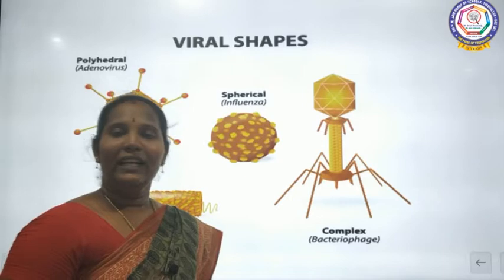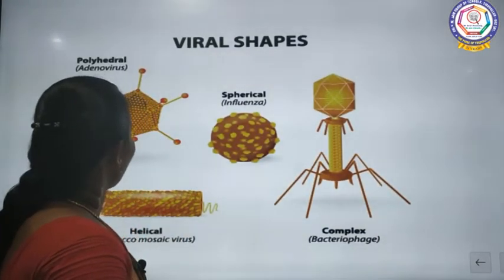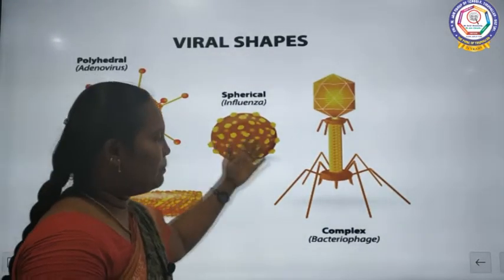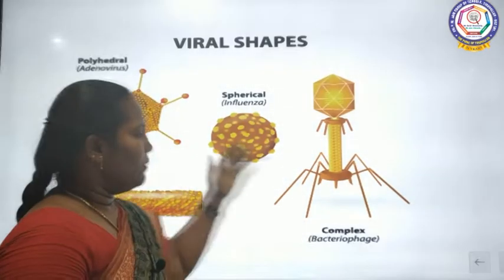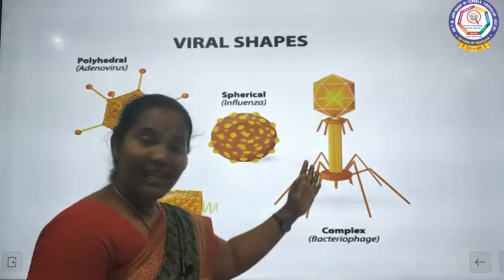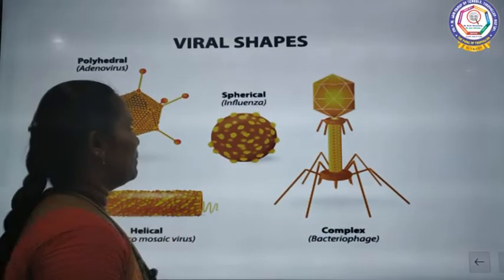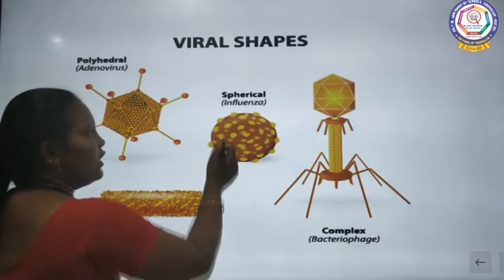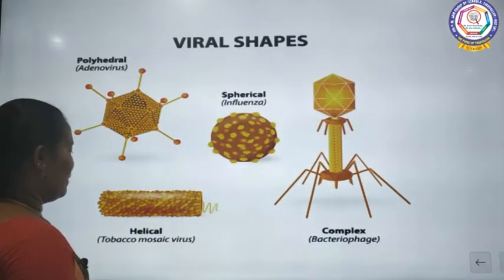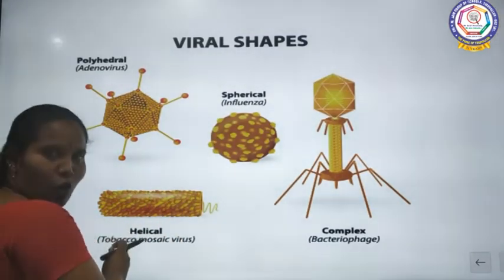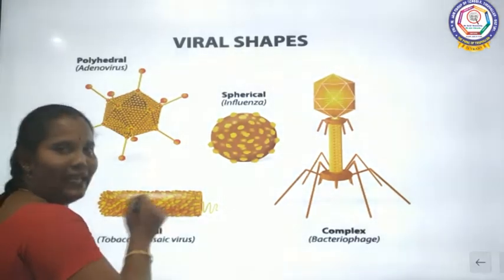Viruses are in different shapes: polyhedral shape, spherical shape, complex shape, and helical shape. Bacteriophage is the example for the complex shape. Influenza virus is the example for the spherical shape. And the tobacco mosaic virus is the example for helical shape.